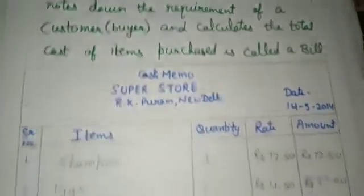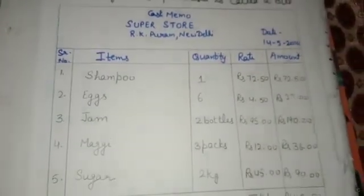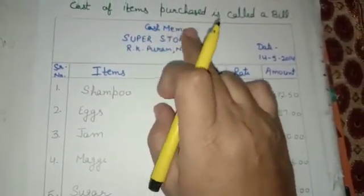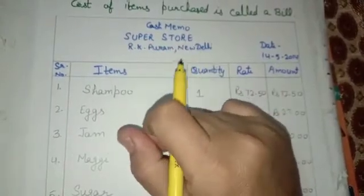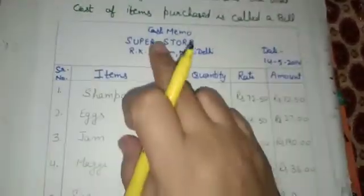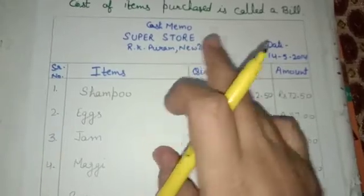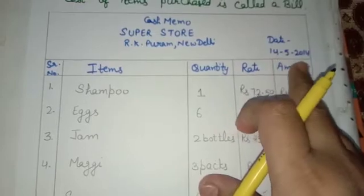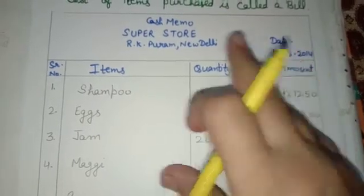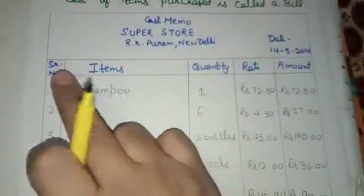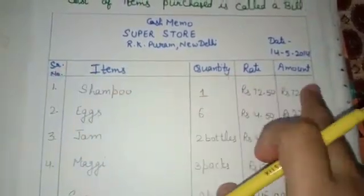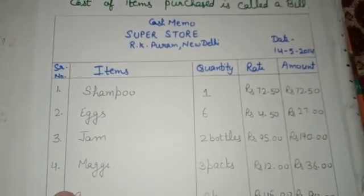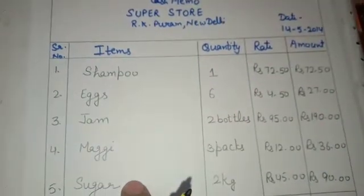Here we have a sample of a bill. At the top of the bill, the word 'Cash Memo' is always written, then the name of the shop — Superstore — then its address, RK Puram, New Delhi, then the date of purchase: 14-5-2014. After this top row, we have five columns in the bill. The first column is always the serial number, then the name of the item, then quantity.